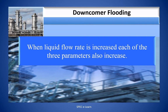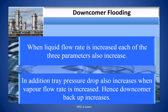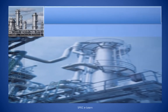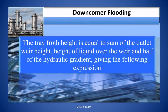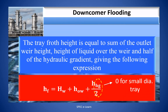When the liquid flow rate is increased, each of these three parameters also increases. Additionally, tray pressure drop also increases when the vapor flow rate is increased, hence downcomer backup increases. The tray froth height equals the outlet weir height plus the height of liquid over the weir plus half of the hydraulic gradient: H_F = H_W + H_OW + H_HG/2, where the last term H_HG/2 is zero for a small diameter tray.